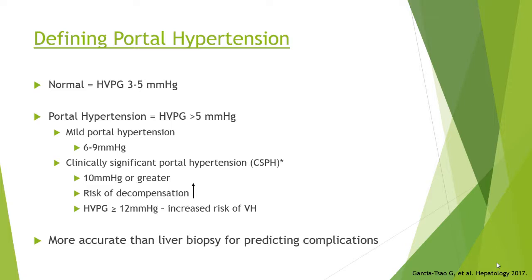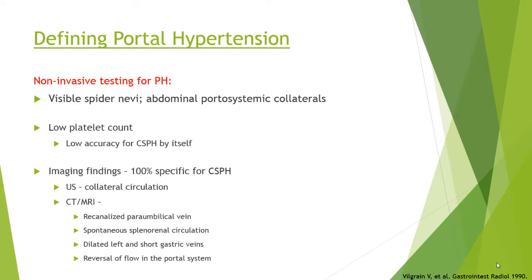Performing the actual pressure gradient assessment is more accurate than liver biopsy for determining decompensation risk. A biopsy tells us about scarring and etiology but not about portal hypertension risk. In the United States, we don't do a lot of invasive pressure monitoring — most studies using hepatic venous pressure gradients come out of Europe, where they do this more frequently.